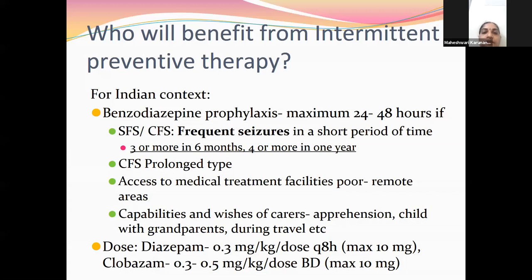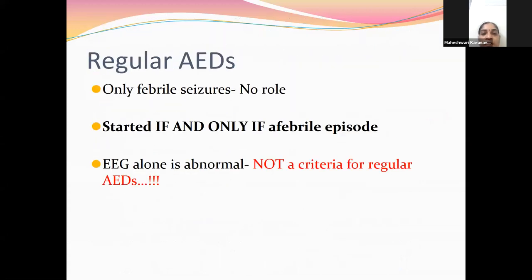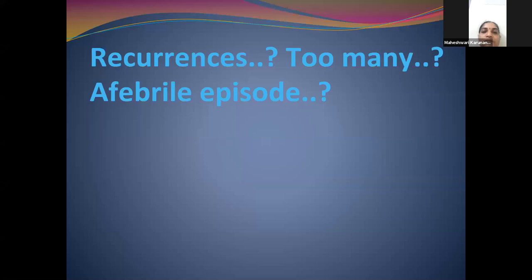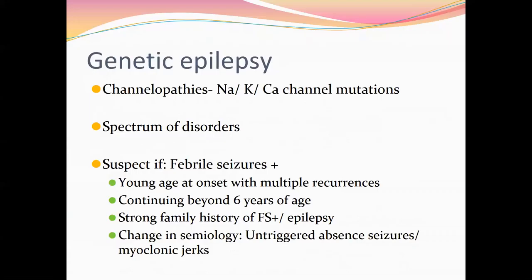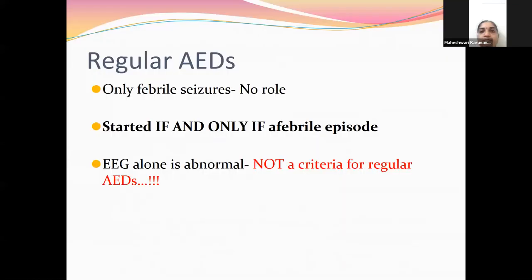The drugs used for intermittent febrile seizure prophylaxis are diazepam and clobazam. The dose for diazepam is 0.3 mg/kg per dose every 8 hours, and for clobazam the maximum dose is 0.75 mg/kg per day in two divided doses.